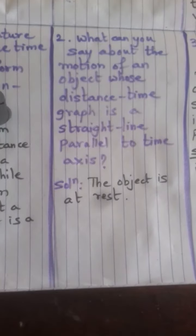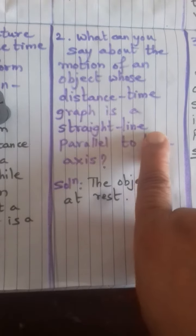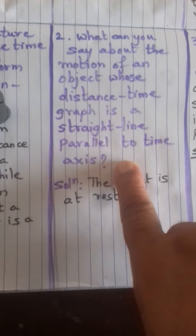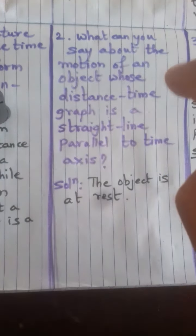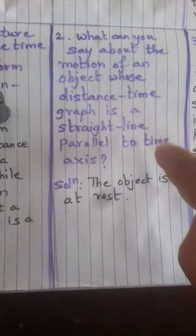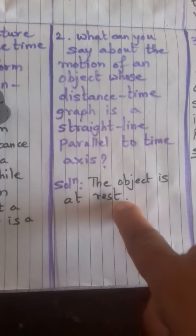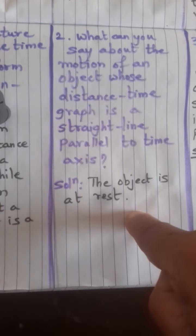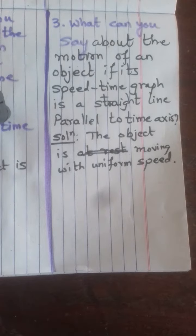That is the answer for this first in-text question on page number 107. Now the second question: What can you say about the motion of an object whose distance-time graph is a straight line parallel to the time axis? If the distance-time graph is a straight line parallel to the time axis, it means the object is at rest.